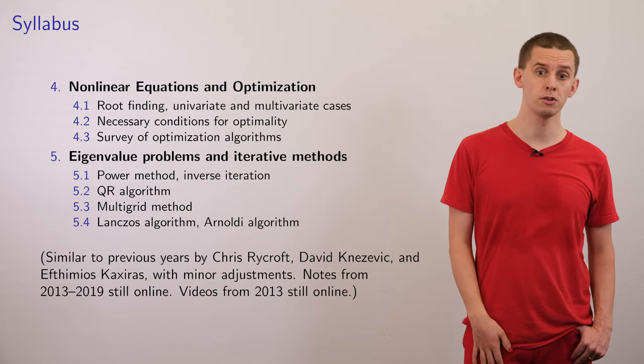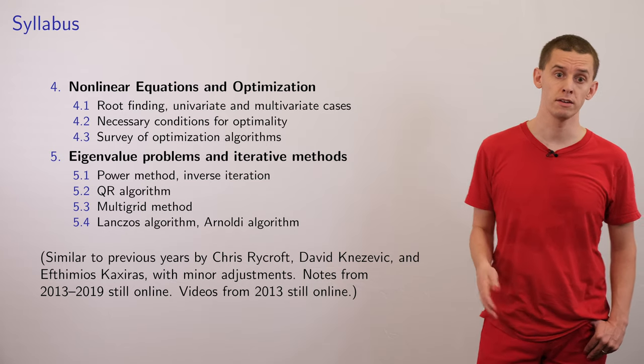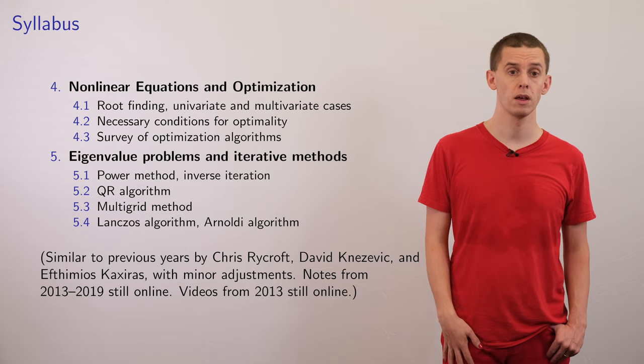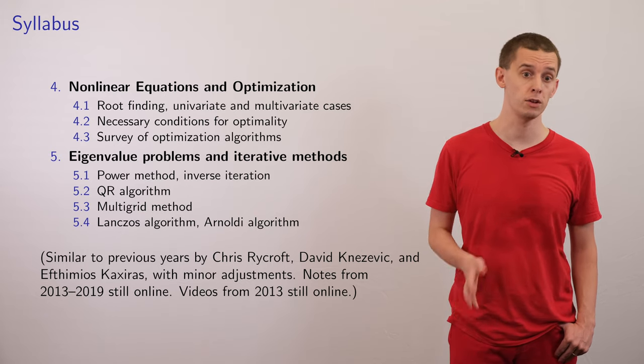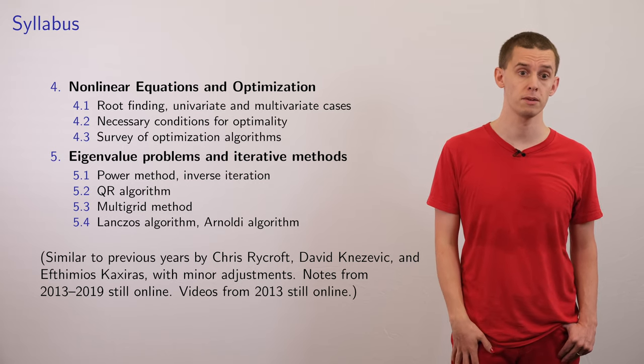The fourth unit of the course is on nonlinear equations and optimization. We'll look at root finding, both for the univariate and multivariate cases. We'll look at conditions that you can impose on a function to guarantee that you might have an optimal solution and provide a survey of optimization methods.